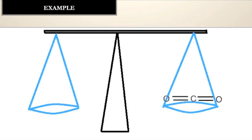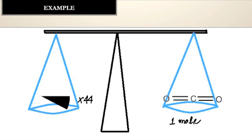Suppose we have a balance: on one side I have a molecule of CO2 (carbon dioxide), and on the other side I keep one-twelfth of the mass of one atom of carbon. To equalize both sides, I have to multiply this by 44. This means one molecule of carbon dioxide is 44 times heavier than one-twelfth of one atom of carbon-12. This is an example of how molecular mass is calculated for a single molecule.